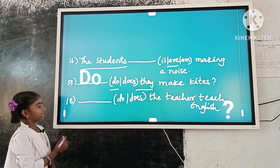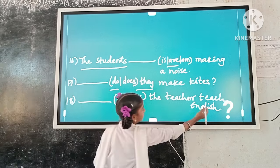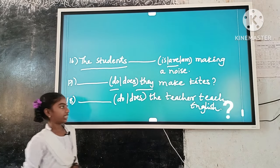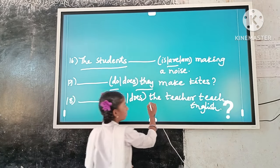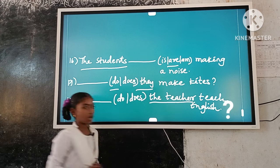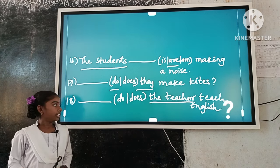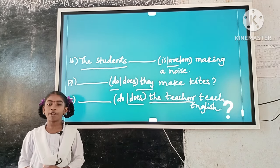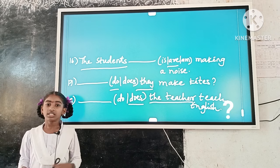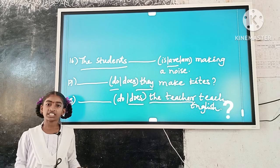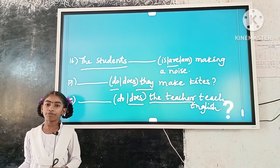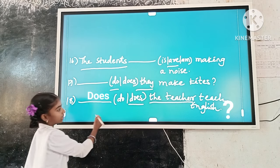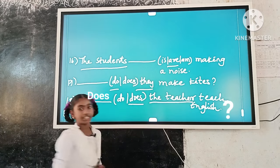Example number 18: Dash the teacher teach English? Here, the subject is singular. 'Does' is a singular verb form. So, singular subject and singular verb form agree. The answer is: Does the teacher teach English?